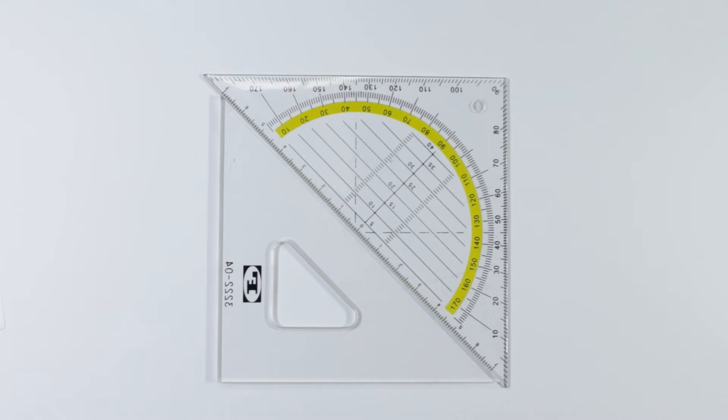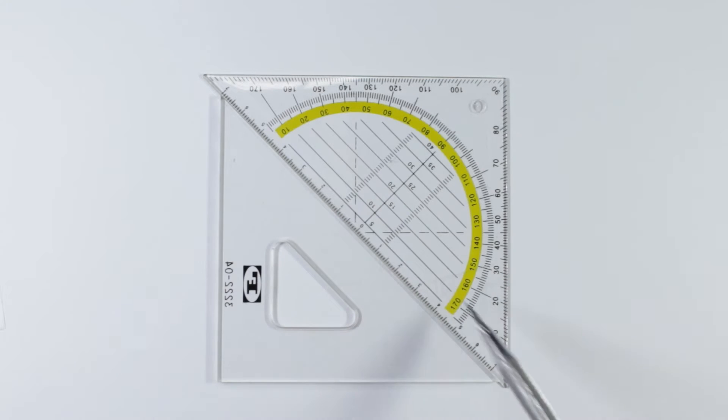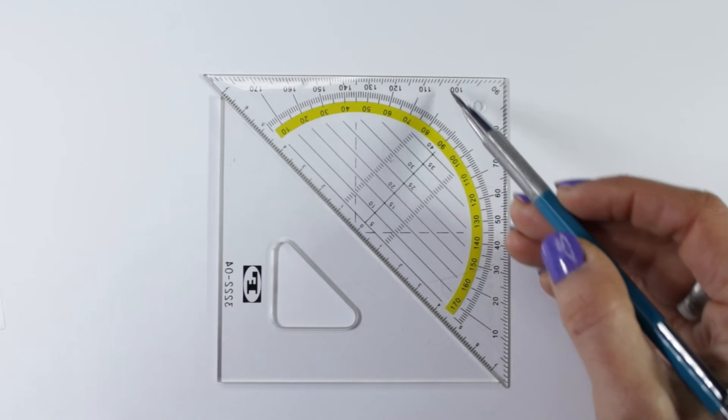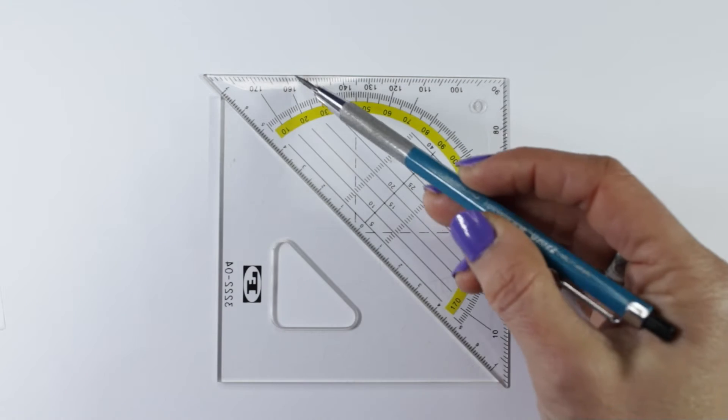For this technique to work, you need the same type of triangles I am using. They can be bigger or smaller, but they need a 90 degree angle here and 45 degree angles in these corners.